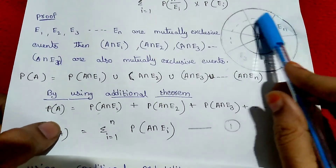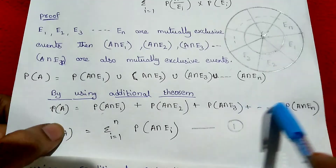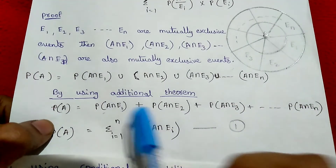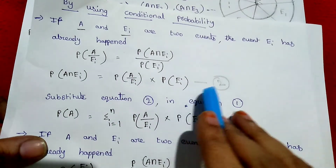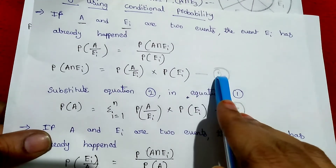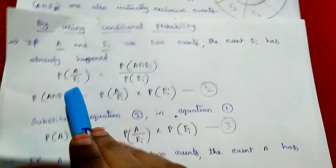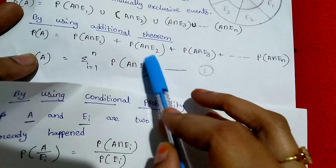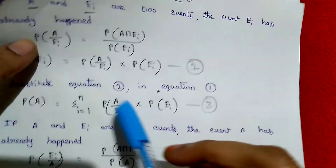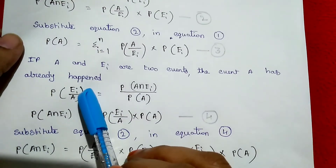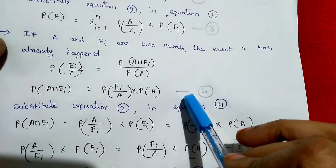We checked out the equation using the Venn diagram. We used the addition theorem to apply and wrote a simple summation. The first equation was established, then the second equation using conditional probability was applied, then we substituted the second equation into the first to get the third equation, and then applied the fourth equation.